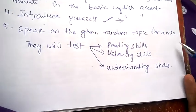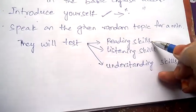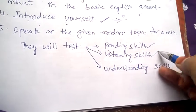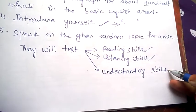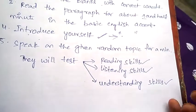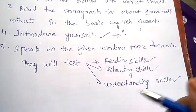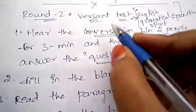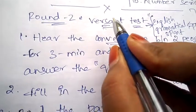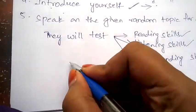Under VERSE and test, they'll be testing your reading skills: how well you are reading, how well you are listening, how well you are understanding, and what is your vocabulary, pronunciation, spontaneity, and English competency. All these things will be seen in this VERSE and test. Once you get qualified in this VERSE and test, you will be promoted to Round 3, which is the technical round.